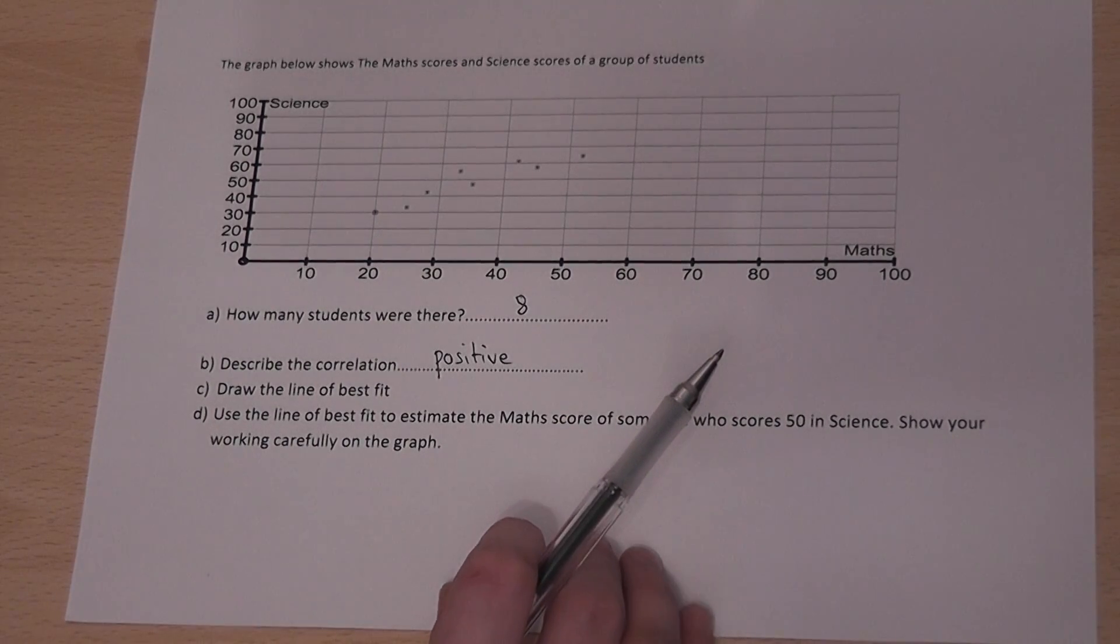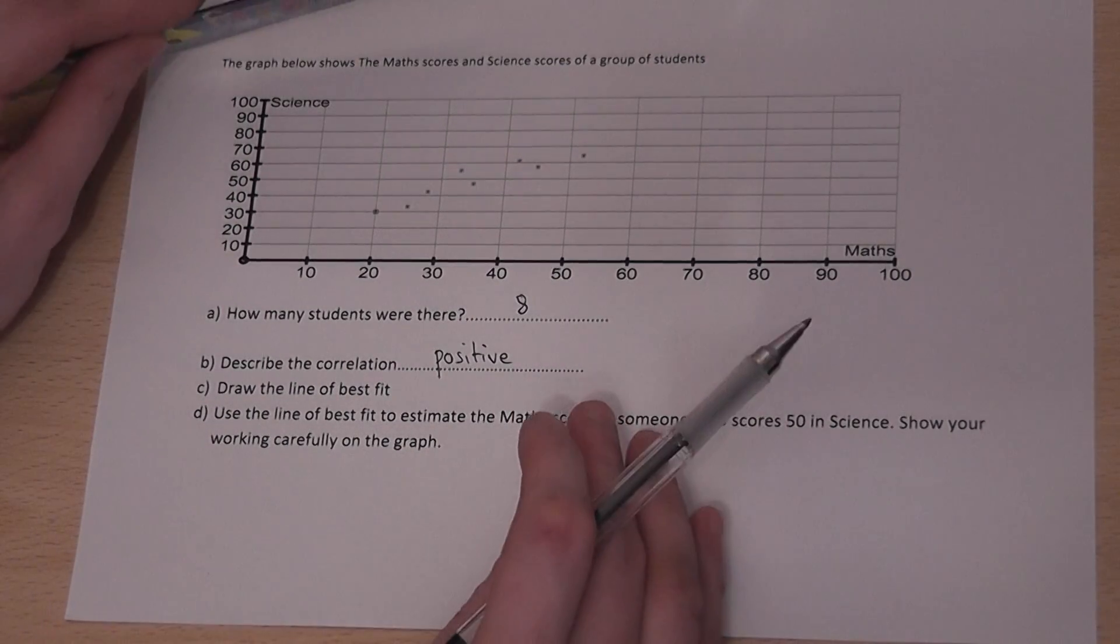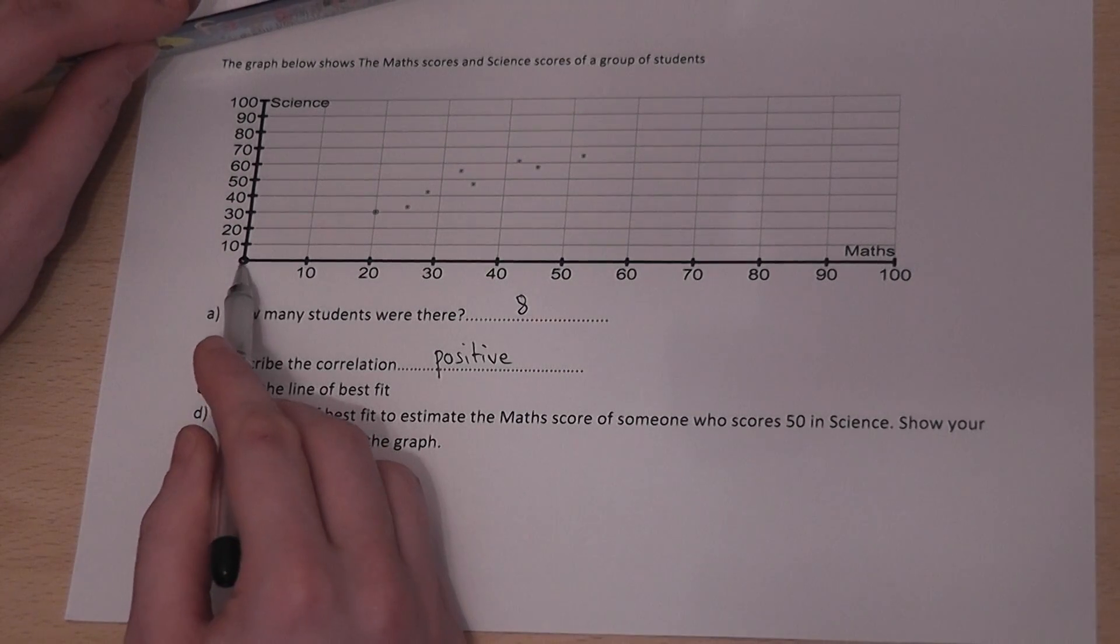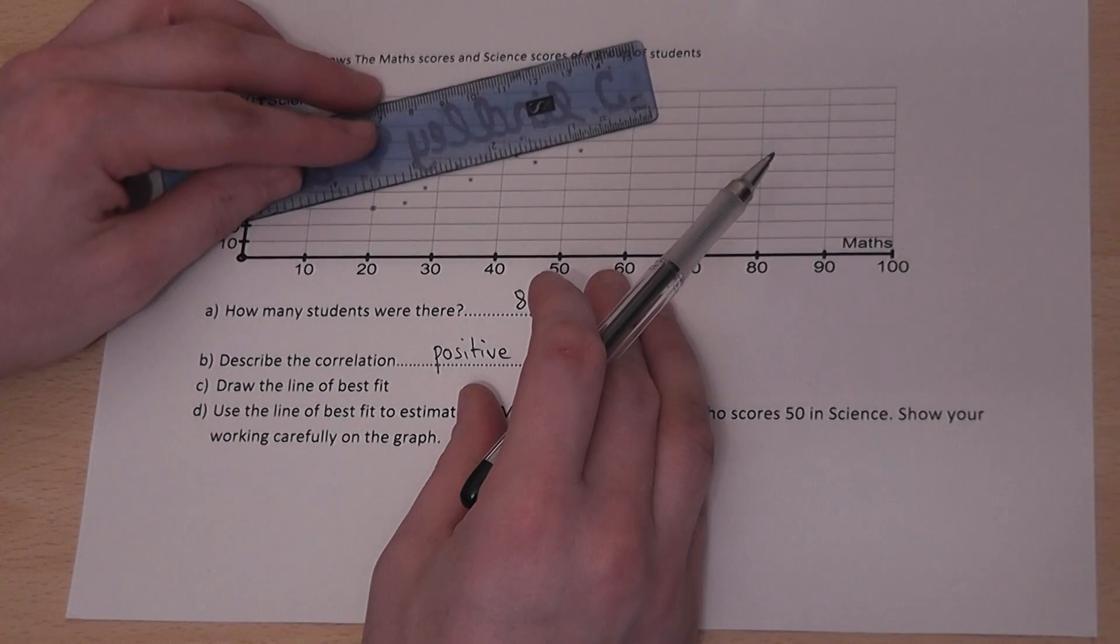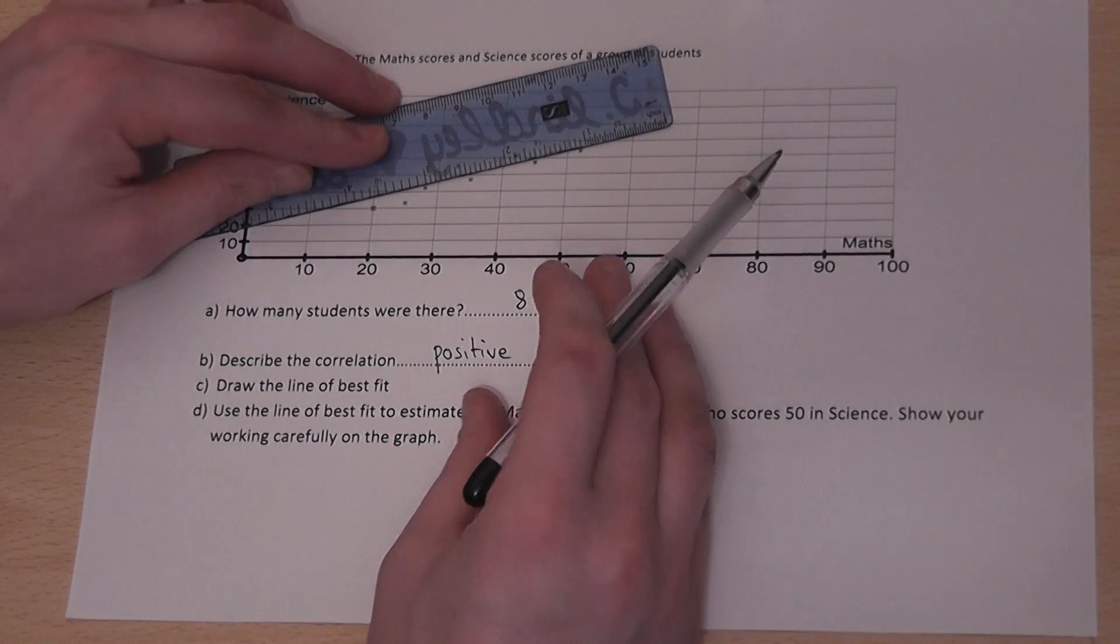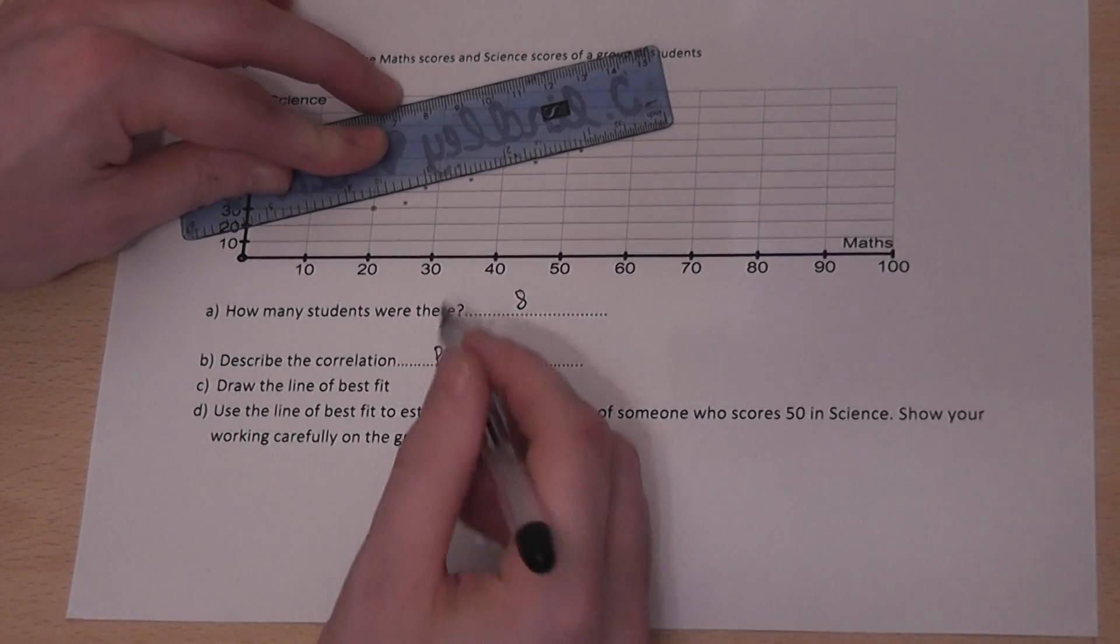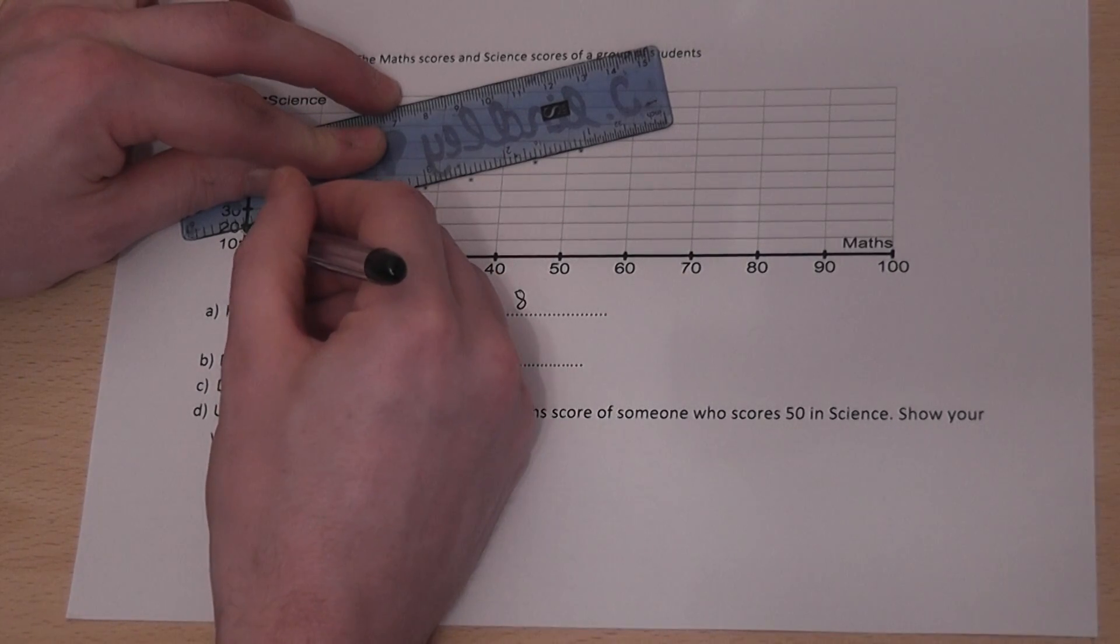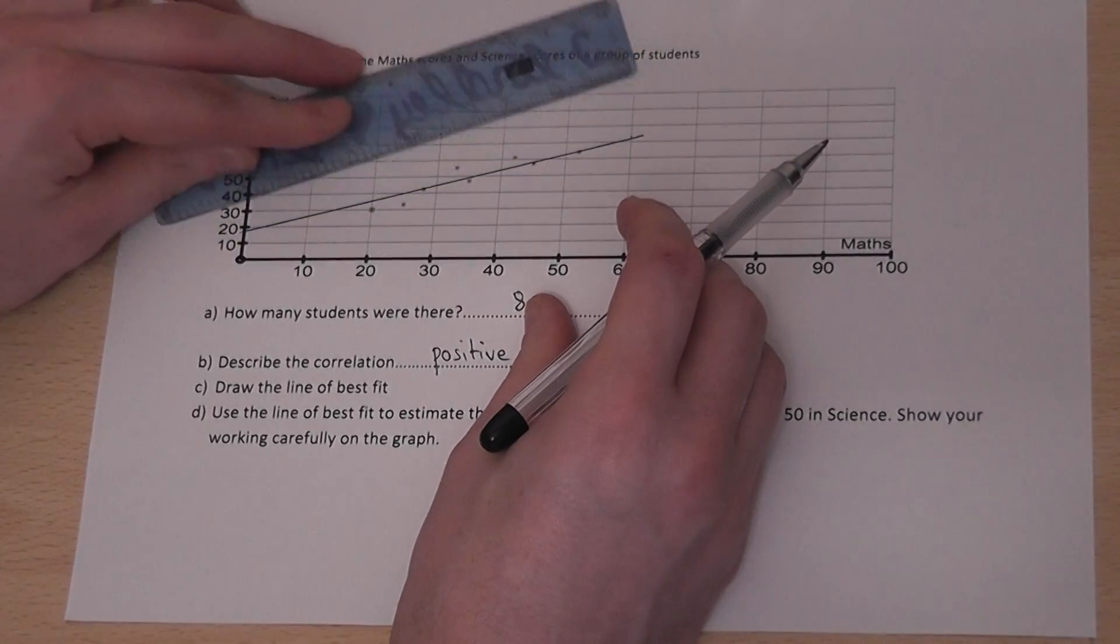Now we can draw a line of best fit, which passes through the dots. Now, we don't worry about the origin. That's a key misconception. We get our ruler and we draw a line through what we perceive to be the centre of the dots. There's room for error here. There's not one perfect answer on a GCSE paper. So I draw my line in the way that I think best goes through as many dots as possible.